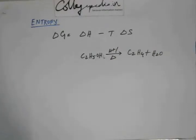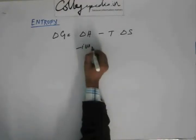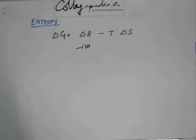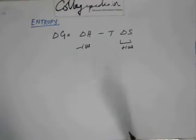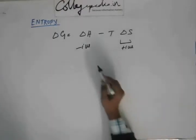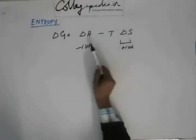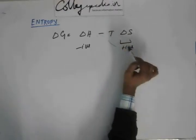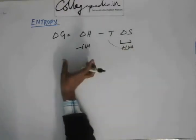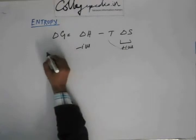If delta G is negative then the reaction is spontaneous; if delta G is not negative then the reaction is not spontaneous. Now let's see when delta G will be negative. Suppose delta H is negative — meaning energy is being released from the system — and delta S is positive, meaning entropy is increasing and energy is being dispersed out. In this case the whole expression is going to be negative, so delta G will always be negative.